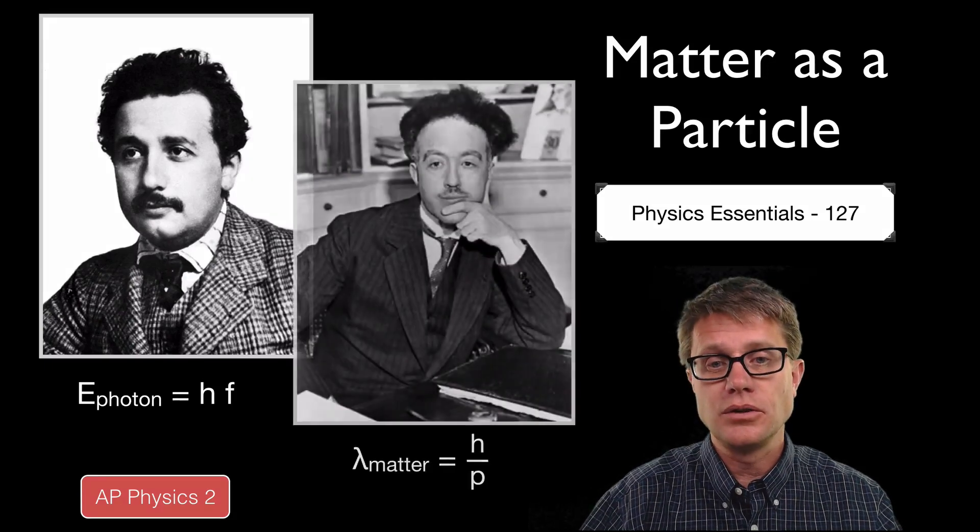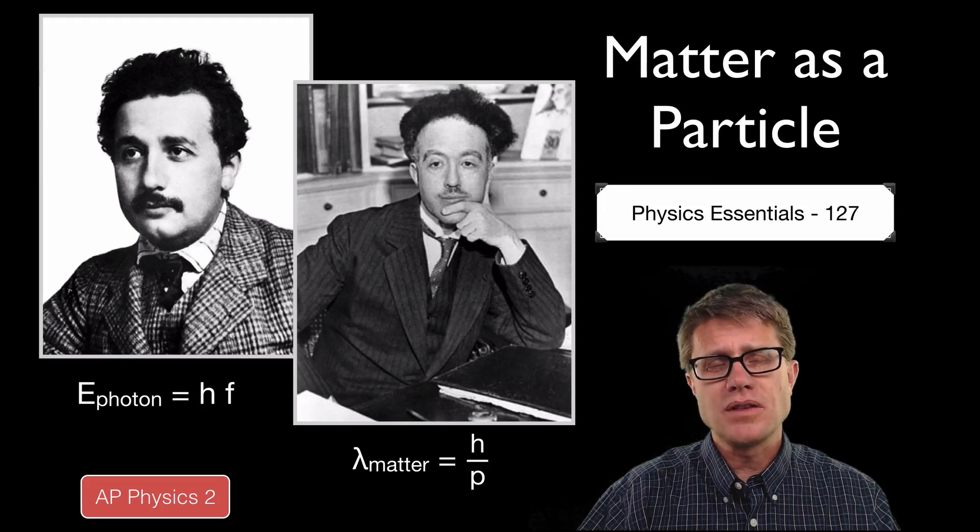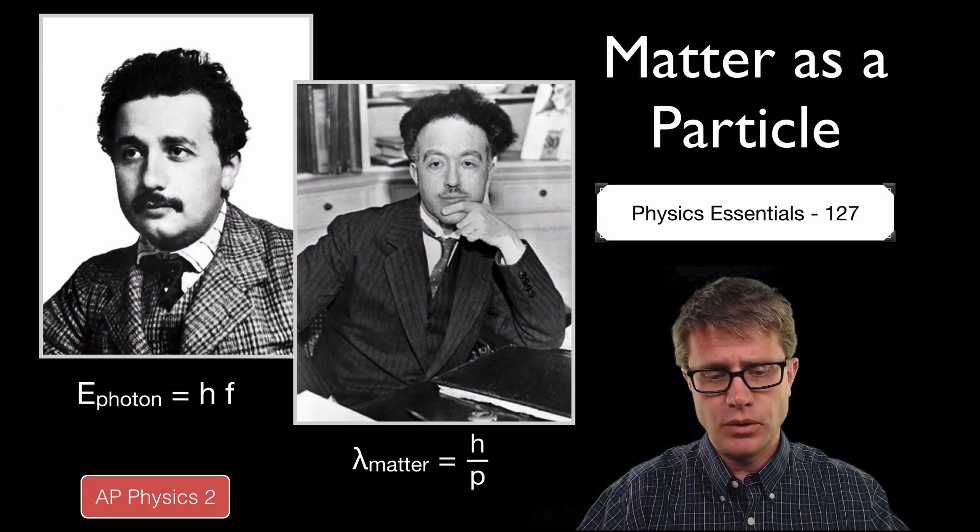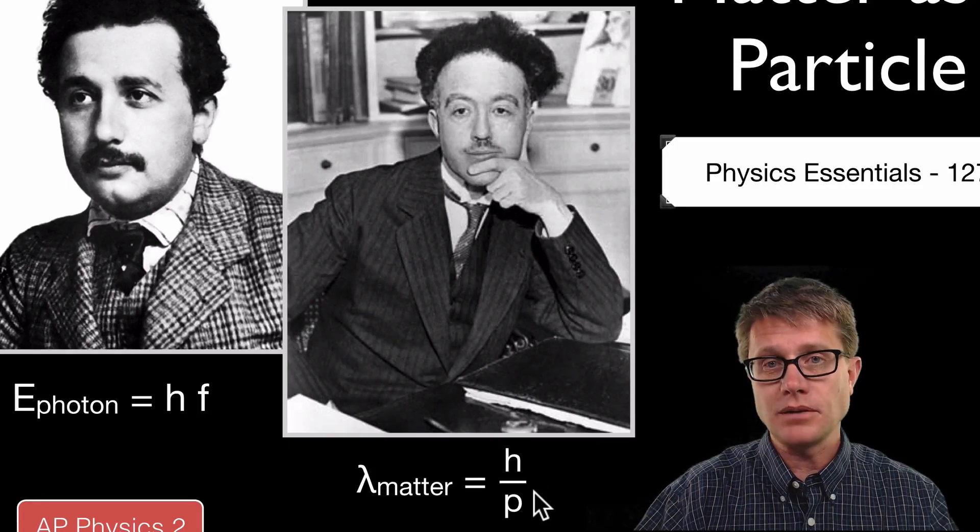Well another scientist, Louis de Broglie, who didn't even have his Ph.D. he was just working on his thesis, proposed that matter is maybe made up of waves. And he even came up with a formula where the wavelength of matter is equal to Planck's constant divided by the momentum.